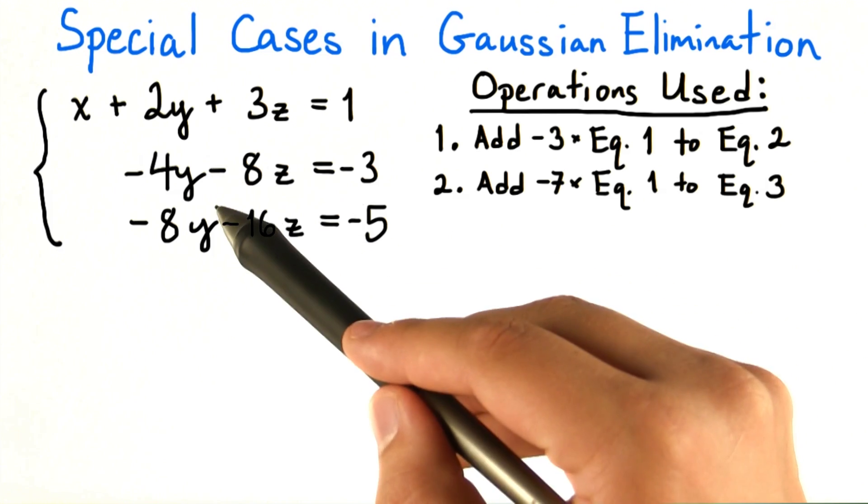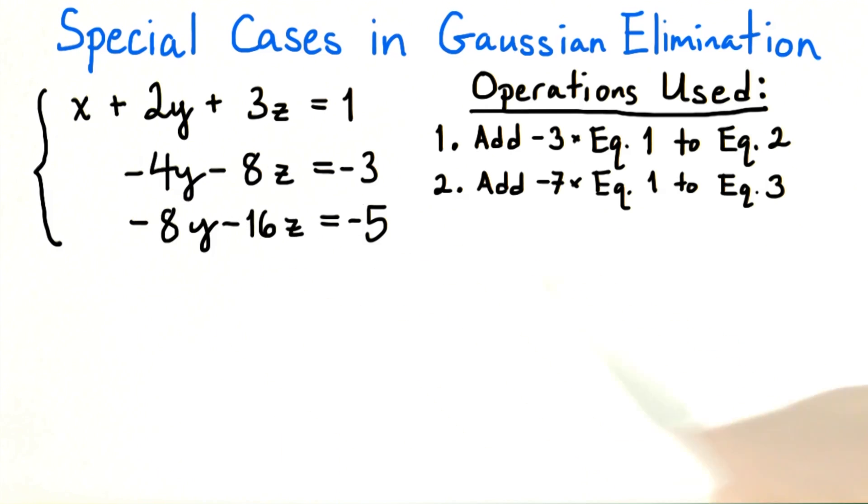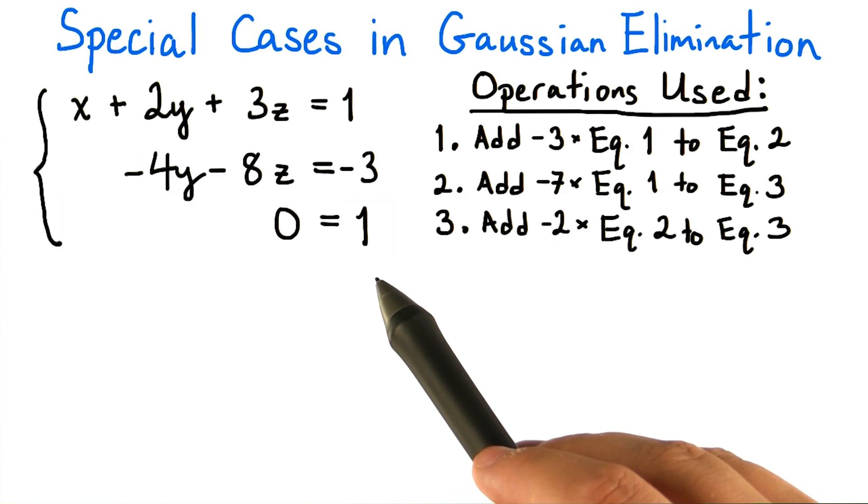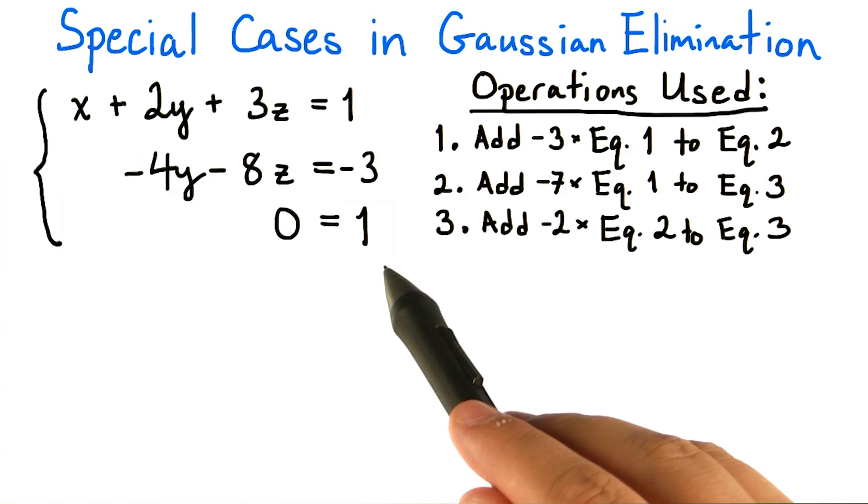Then we drop down to the second equation and start to clear the y terms beneath negative 4y. Subtract 2 times the second equation from the third and now we're in a very interesting situation. There is nothing remaining on the left hand side of the third equation, but there is a 1 remaining on the right hand side, giving us the equation 0 equals 1.